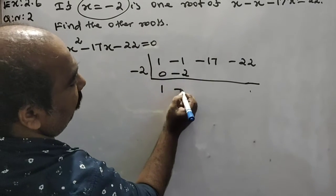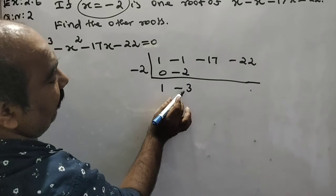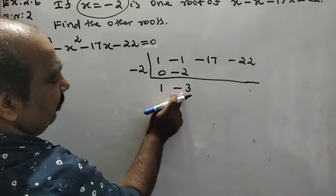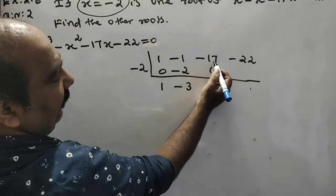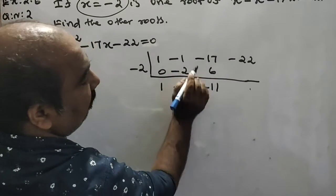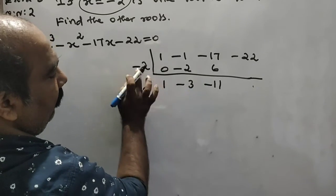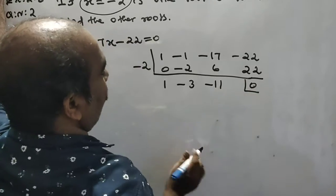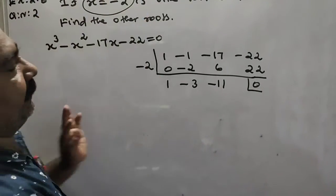Continuing synthetic division: 1 times minus 2 gives minus 2, then minus 1 plus minus 2 gives minus 3. Minus 3 times minus 2 gives plus 6, and minus 17 plus 6 gives minus 11. Then minus 11 times minus 2 gives plus 22, and 22 plus minus 22 gives remainder 0.